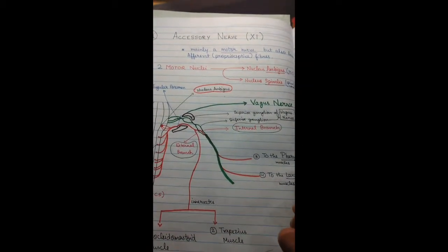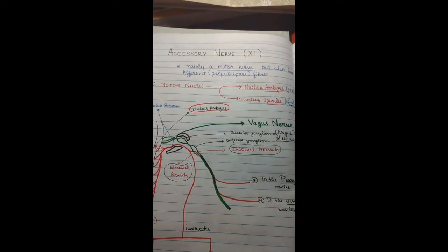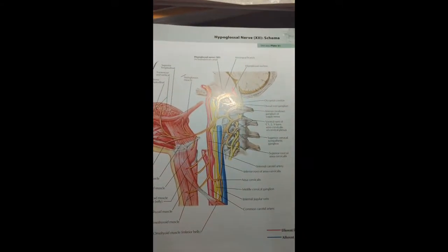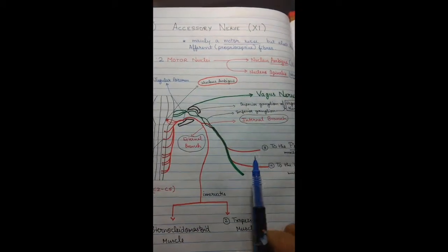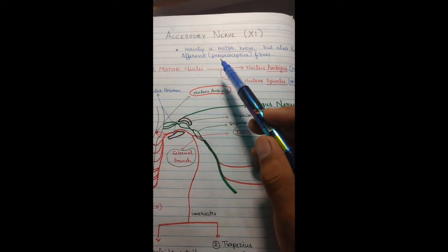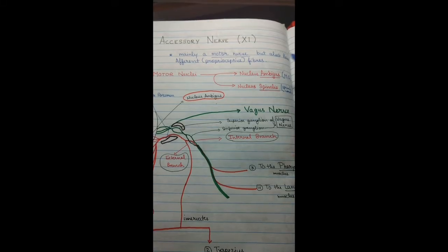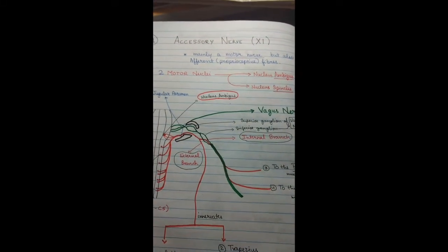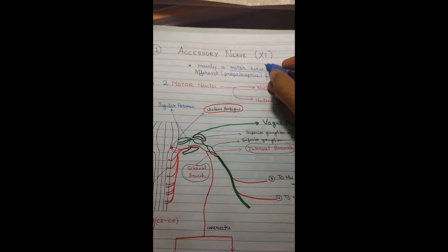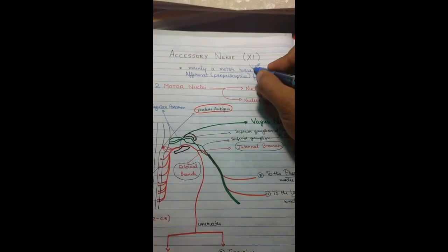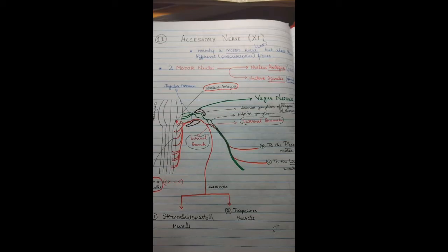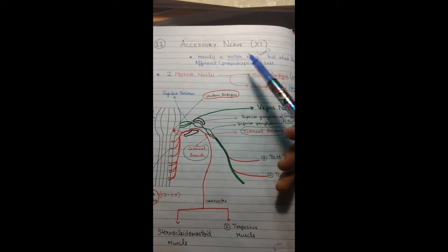Today we are going to study about the accessory nerve, which is the eleventh cranial nerve. It is mainly a motor nerve, but it also has some efferent proprioceptive fibers, meaning it can receive stimuli from muscles or tendons. There are two nuclei in the accessory nerve, and both are motor nuclei.